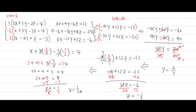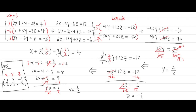We've solved for x, y, and z. Write the answer as an ordered triple: x first, which is 1/2; y second, which is 2/3; and z third, which is negative 1/2. The first number is for x, the second for y, and the third for z. Box it with pride — we are done!